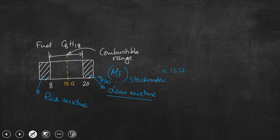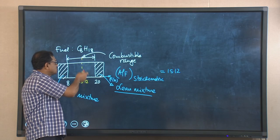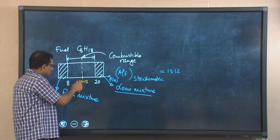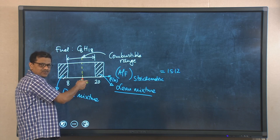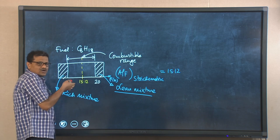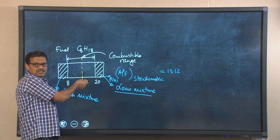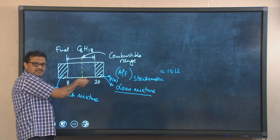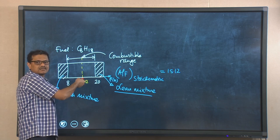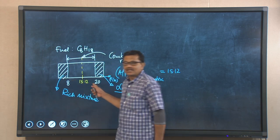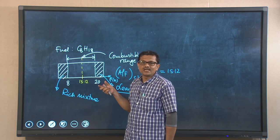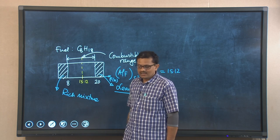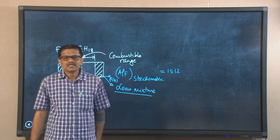It is not possible to supply the stoichiometric air-fuel ratio at all times, and this combustible range will be different for different fuels. If it is not 15.12, it could be 17 or 10. The engine may sometimes require higher than 15.12 but less than 20, and sometimes less than 15.12 but higher than 8. Depending on the requirement of fuel-air ratio based on the power output or load of the engine, the engine operation can be divided into 3 different regimes.